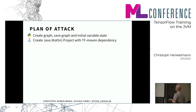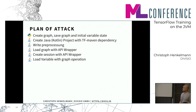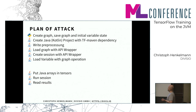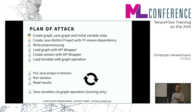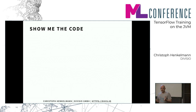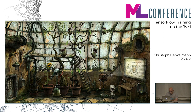From there on, you make a normal Java or Kotlin project with a Maven dependency, write your pre-processing code in normal Java, load the graph you created as a pb file, create a session, load the variables, put Java arrays into tensors, run the session, read the results, and repeat. It's basically the same loop you do in a normal TensorFlow tutorial with session feeding — every step done in Python, we do in Java.